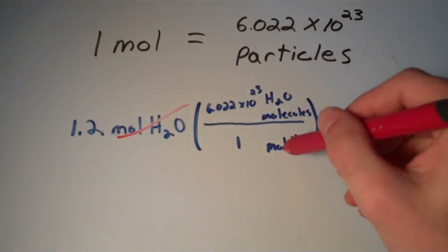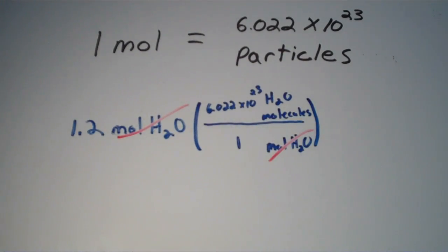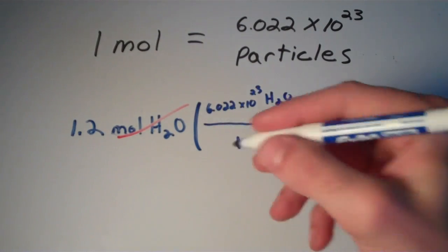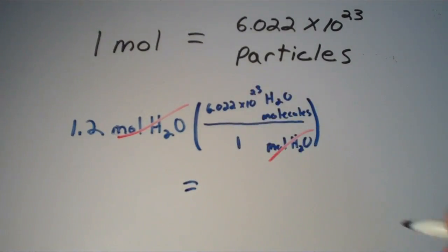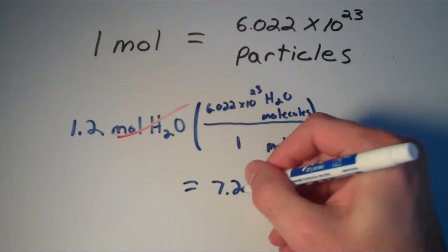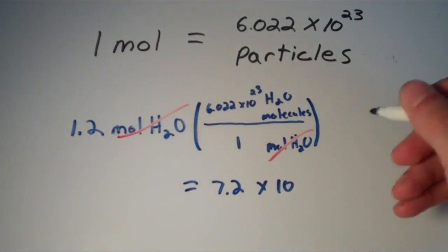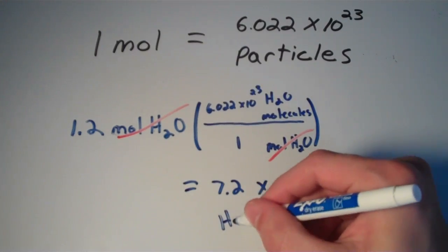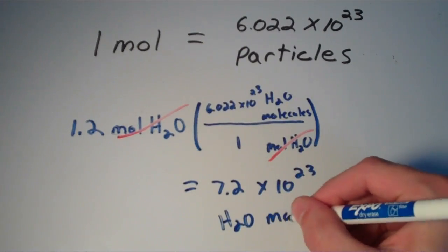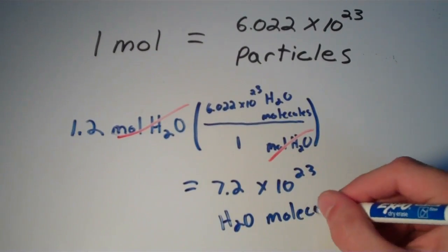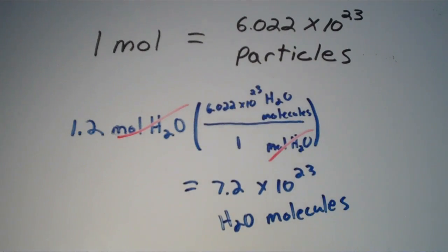Moles of water cancels with moles of water, and we end up with 7.2 times 10 to the 23rd water molecules.